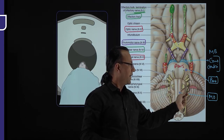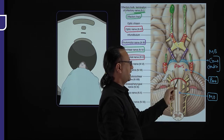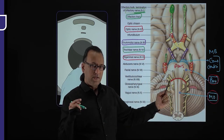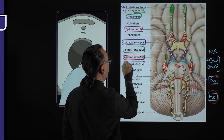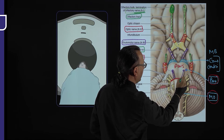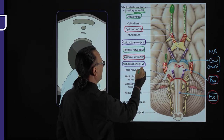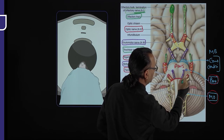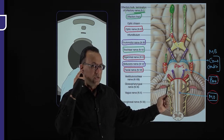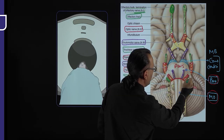Cranial nerves 6, 7, and 8 all come at the pontomedullary junction. The most medial is the abducent nerve, cranial nerve 6, at the pontomedullary junction. Lateral to that is the facial nerve, cranial nerve 7, which has motor and sensory components. Still lateral to that is the vestibulocochlear nerve, cranial nerve 8, for hearing and balance — also at the pontomedullary junction.